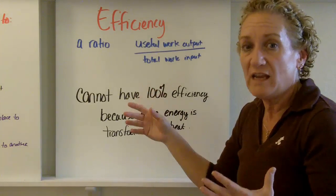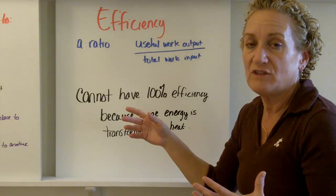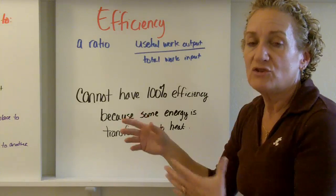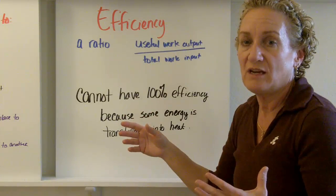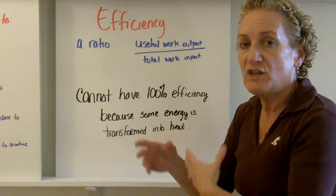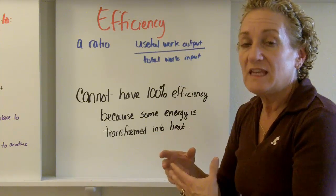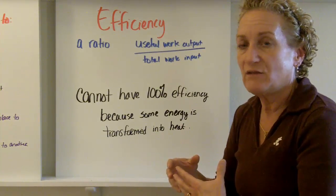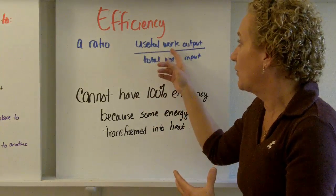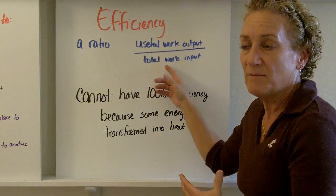Now, it'd be great if we could have a machine that was 100% efficient, but we can't. There's no such thing as a 100% efficient machine. Why? Because as a machine runs, as a machine does work, things heat up, and heat is a form of energy. So, you lose some of the work in terms of energy.